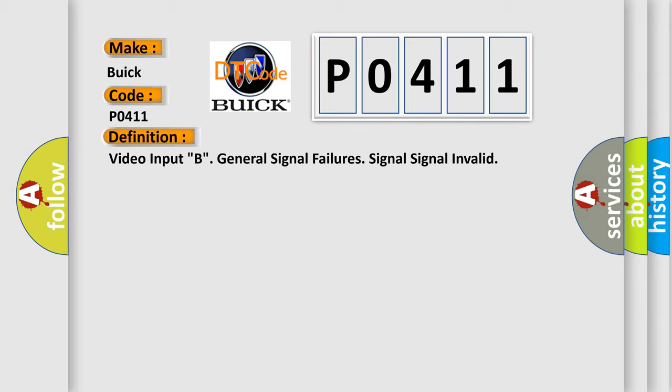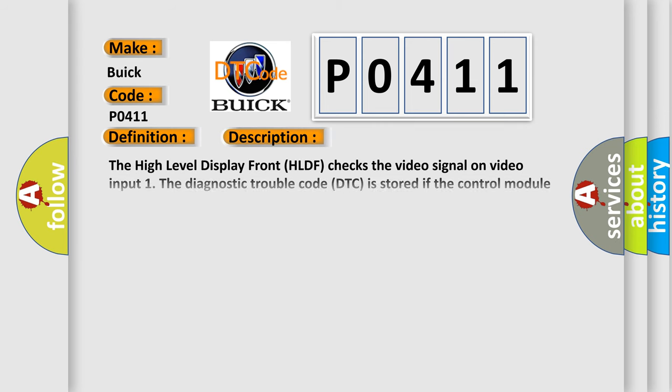And now this is a short description of this DTC code. The high level display front HLDF checks the video signal on video input 1. The diagnostic trouble code DTC is stored if the control module detects that the signal is incorrect. The control module's test for the diagnostic trouble code DTC starts in the event of ignition switch position 2. The control module can only detect the fault once the test has been started and the DTC is stored when the conditions are met.